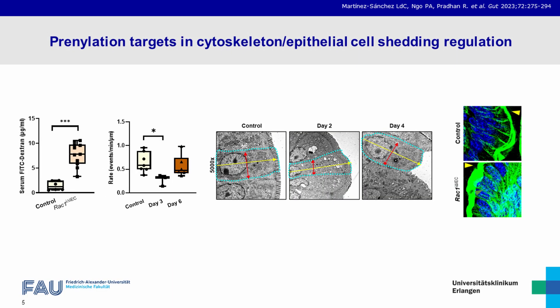Among prenylation targets, we identified RAC1 as a key player for intestinal epithelial homeostasis. Newly generated mice carrying RAC1-deficient IECs showed a significant barrier function breakdown, as well as signs of cell shedding arresting, overcrowding and cytoskeleton rearrangement within intestinal epithelial cells.